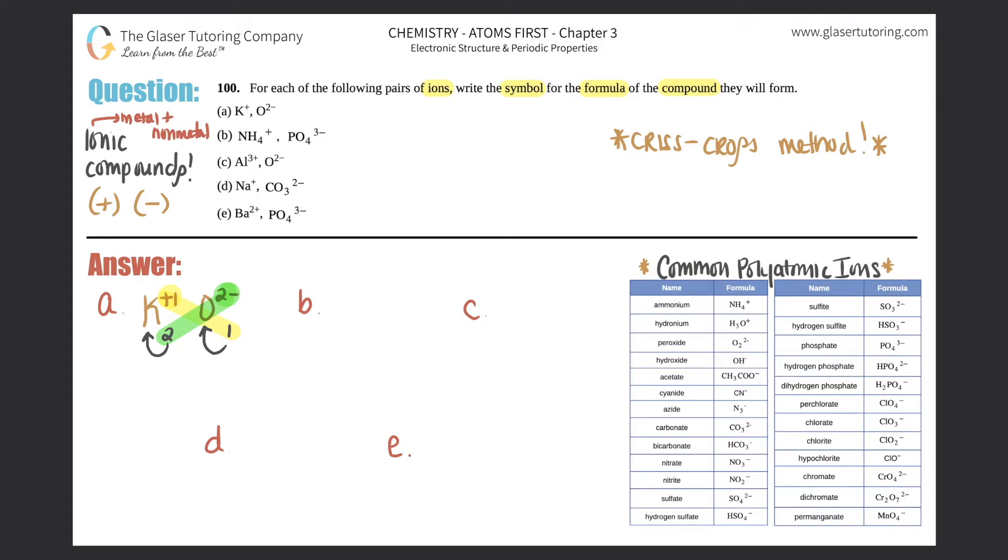When you do the crisscross rule, the positives and negatives go away. You're just looking at the actual number - whether it's a one, two, three, or four. So the compound when potassium comes together with oxygen would be K2 - you need two potassiums for every one oxygen. You can put the one here, but standard we don't usually put ones. That's the answer to a: K2O.